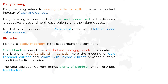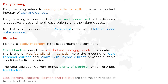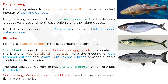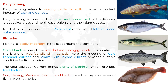Cod, herring, mackerel, salmon, and halibut are the major varieties of fish in North America. Pictures of all the fishes mentioned — cod, herring, mackerel, salmon, and halibut — are present for reference.